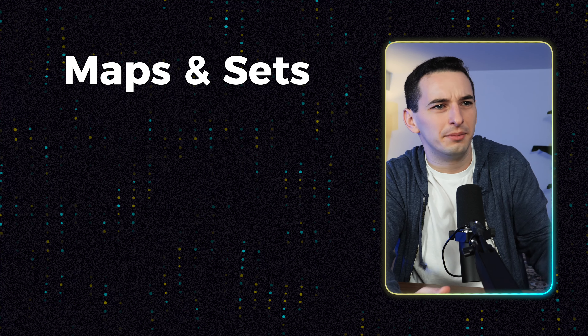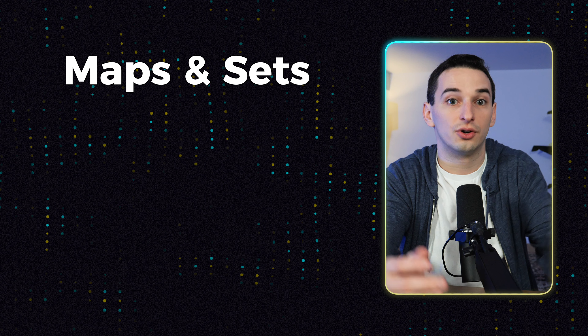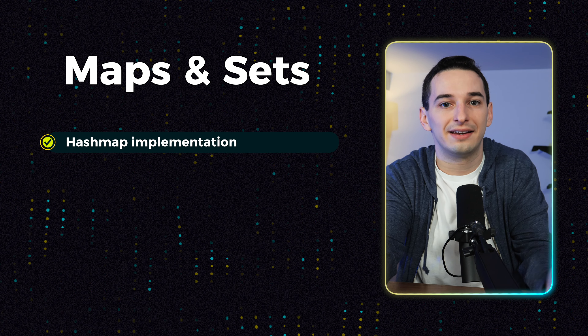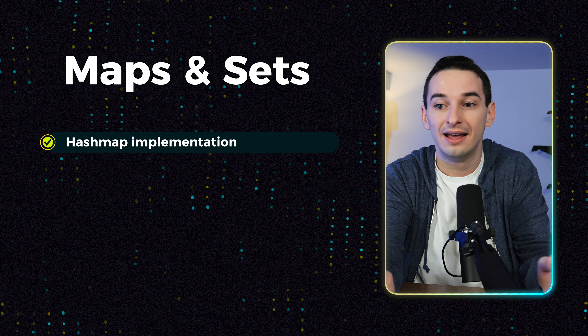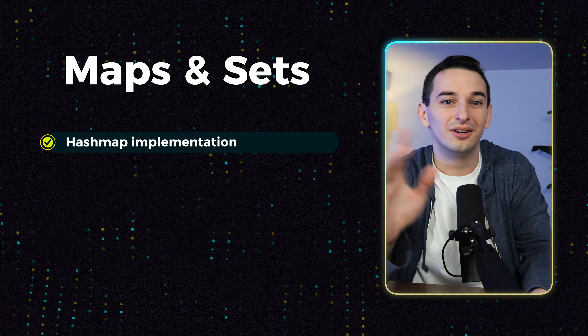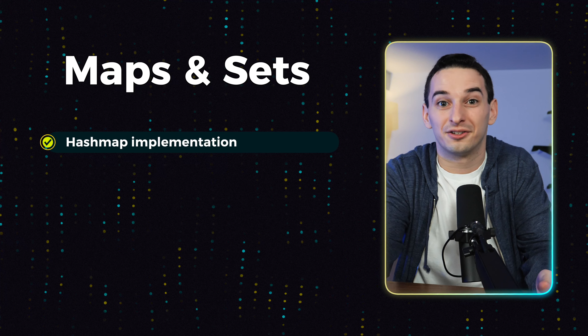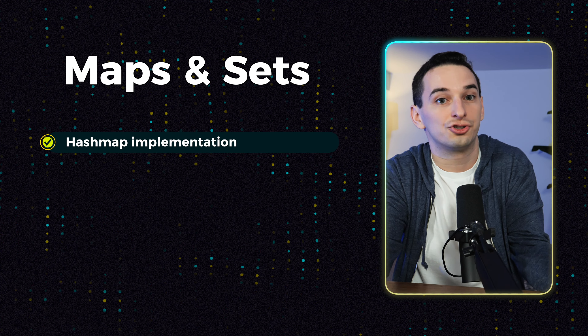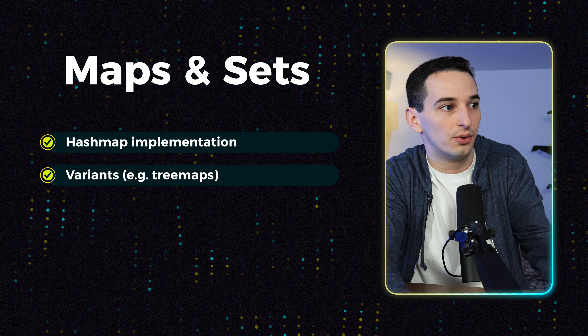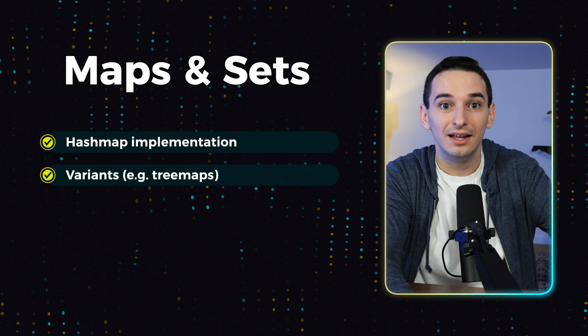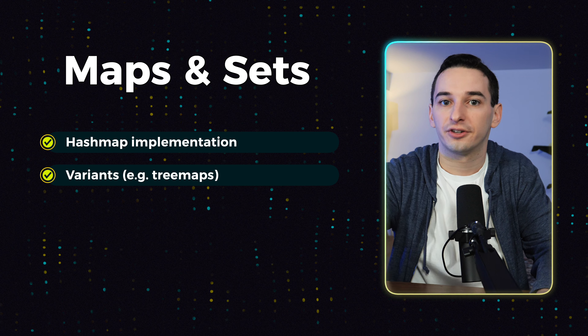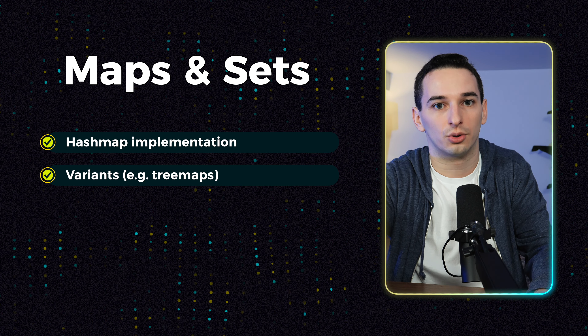For maps and sets, I think the most important thing is going to be to understand how hash maps are actually implemented. In fact, I once had an interview where all they did was sit me down and ask me to implement a hash map from scratch. You can also look into some other types of maps like a tree map, which is going to have a trade-off in time complexity in exchange for keeping a sorted order.